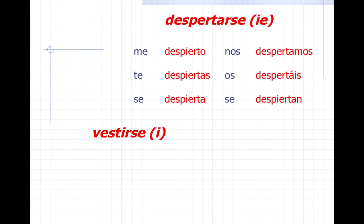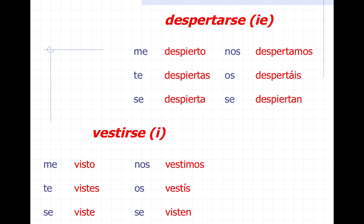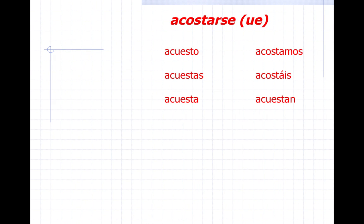Vestirse: the first E in vestirse goes from an E to an IE. Adding the pronouns: me visto, te vistes, se viste, nos vestimos, os vestís, se visten. Acostarse is a stem changer from an O to a UE.